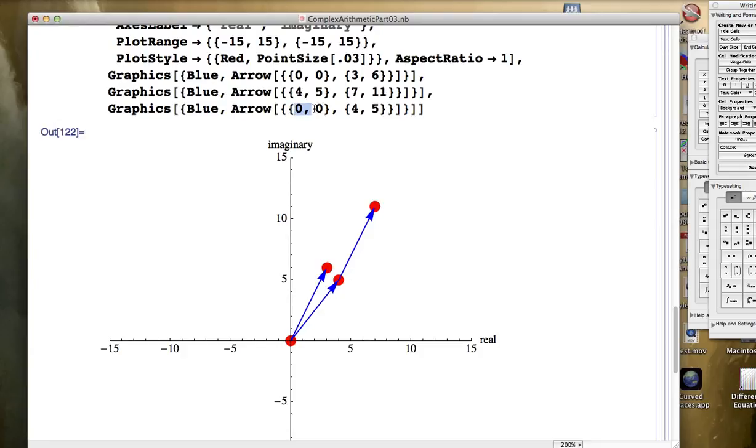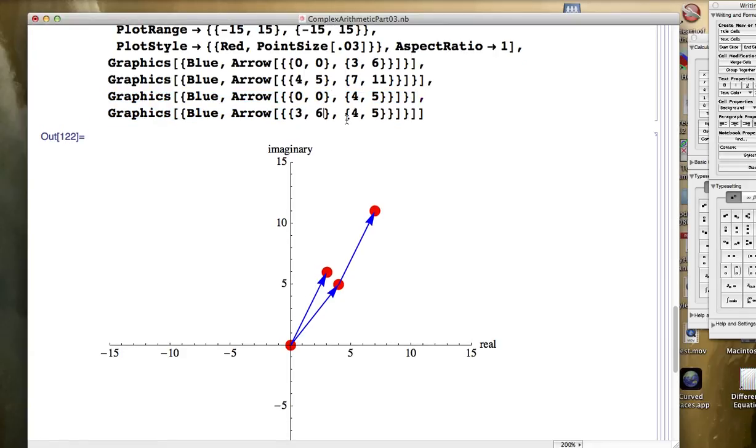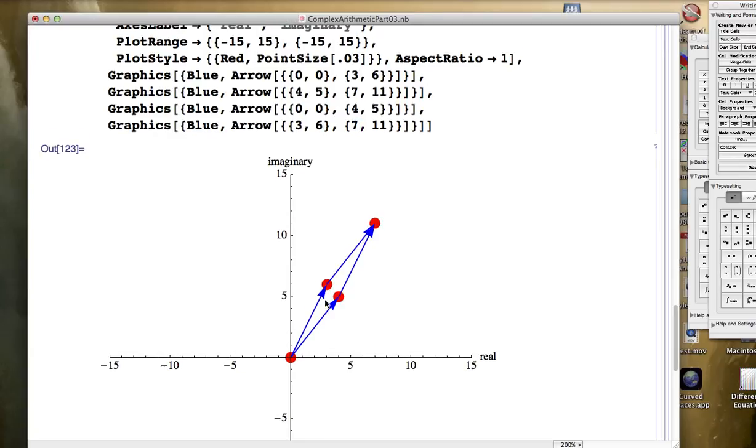There we go. Now I've got an arrow going from the origin to the point 4, 5. It can be thought of as representing the complex number 4 plus 5i. I could also take that and start it at the point 3, 6 and end it at the point 7, 11. And it's going to be the same length in the same direction. Both of those complex numbers can be thought of as representing the complex number 4 plus 5i.